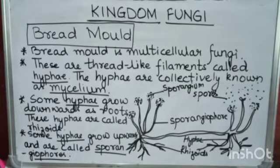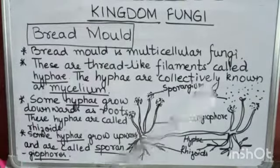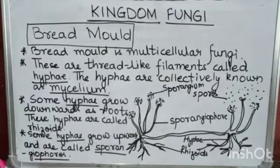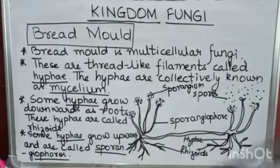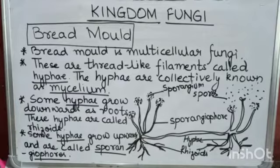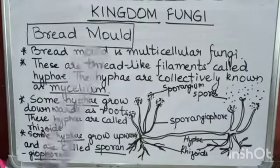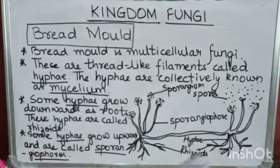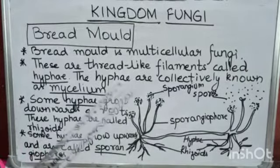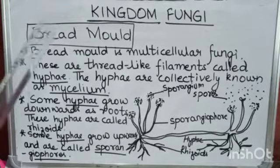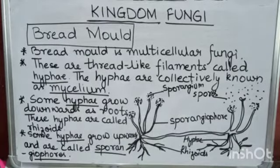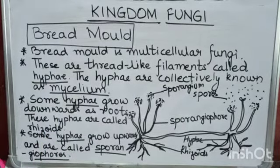The type of fungi you are going to study is bread mold. You must have observed a white, cotton-like growth with black spots on moist or stale bread or stale food. That cotton-like structure or growth is known as bread mold. These bread molds can cause diseases in humans if ingested — they can cause food poisoning.